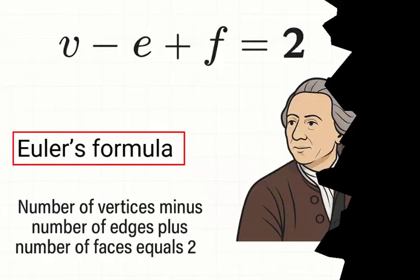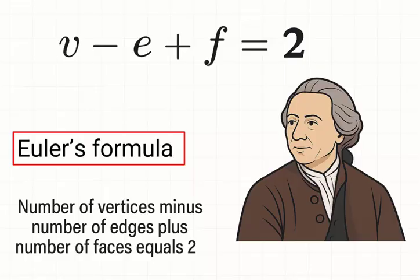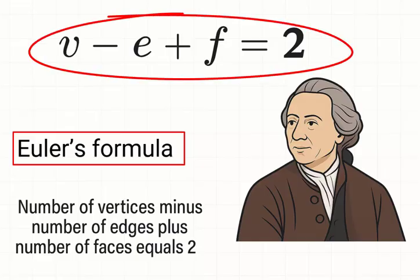To study planarity, we'll use an elegant result called Euler's formula. For any connected planar graph, the number of vertices minus the number of edges plus the number of faces equals 2. That is, V minus E plus F equals 2.